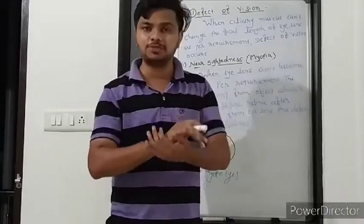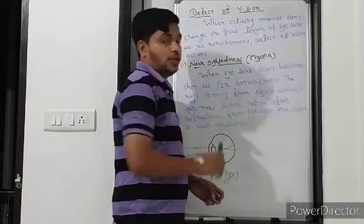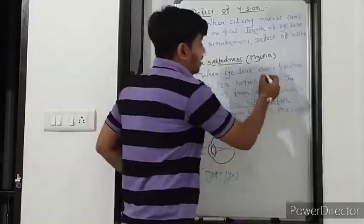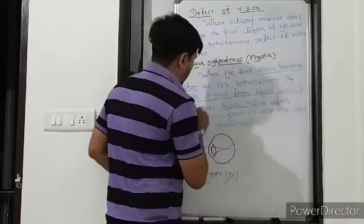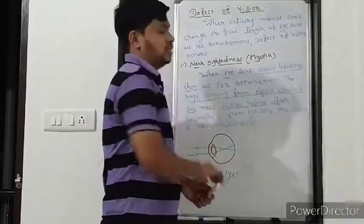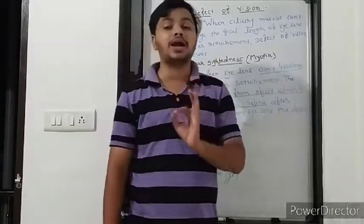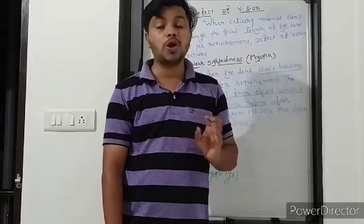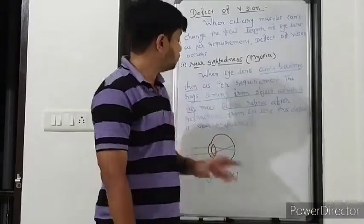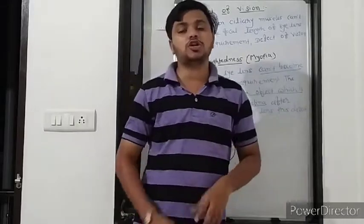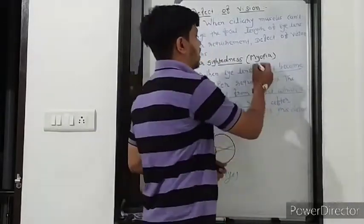When the eye lens can't become thin as per requirement, the rays coming from an object which is far from you meet before the retina. Just because of that you can't see that object clearly, and this type of defect is known as nearsightedness, which is also known as myopia. In nearsightedness you can't see the object which is far from you.